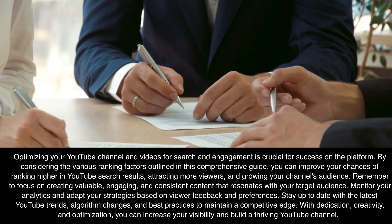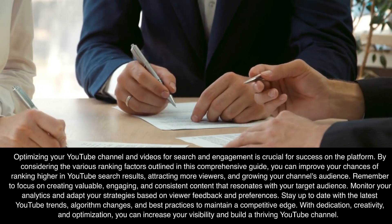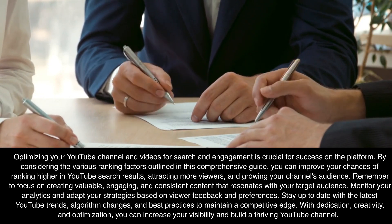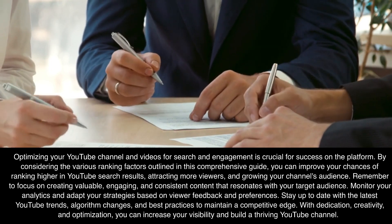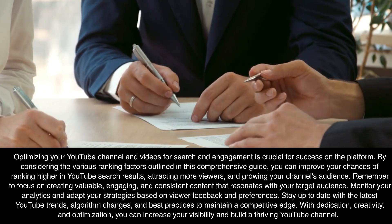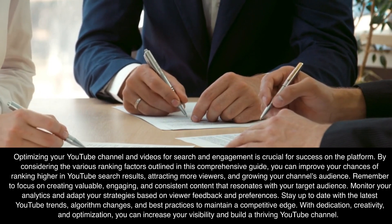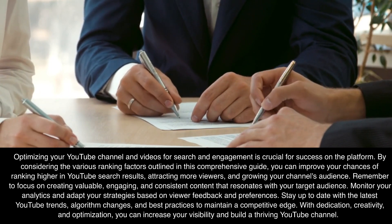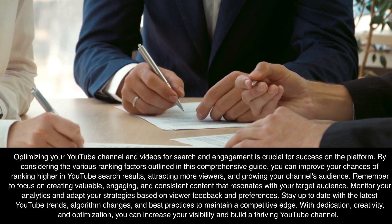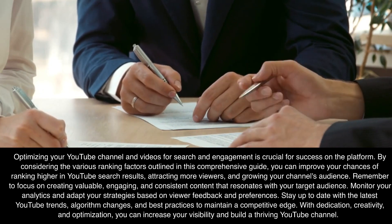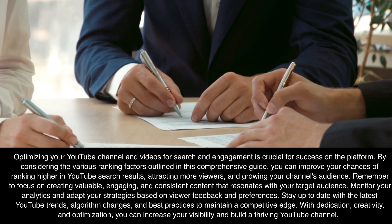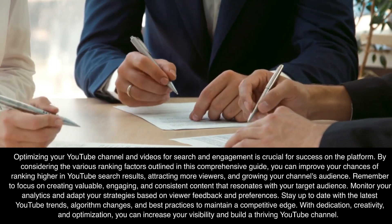Conclusion. Optimizing your YouTube channel and videos for search and engagement is crucial for success on the platform. By considering the various ranking factors outlined in this comprehensive guide, you can improve your chances of ranking higher in YouTube search results, attracting more viewers, and growing your channel's audience. Remember to focus on creating valuable, engaging, and consistent content that resonates with your target audience. Monitor your analytics and adapt your strategies based on viewer feedback and preferences. Stay up to date with the latest YouTube trends, algorithm changes, and best practices to maintain a competitive edge. With dedication, creativity, and optimization, you can increase your visibility and build a thriving YouTube channel.